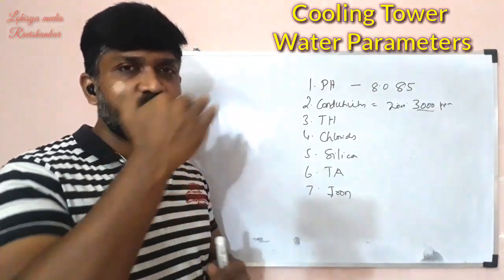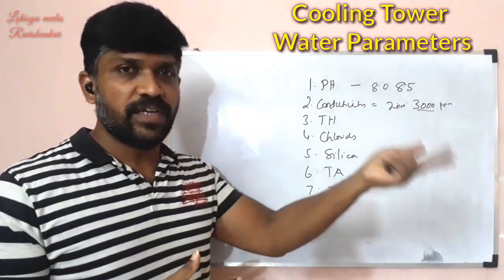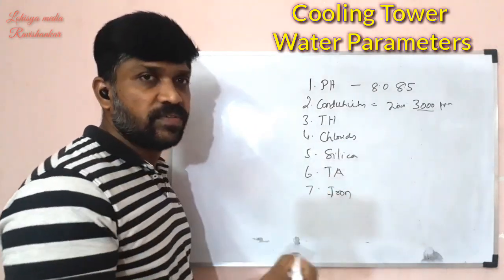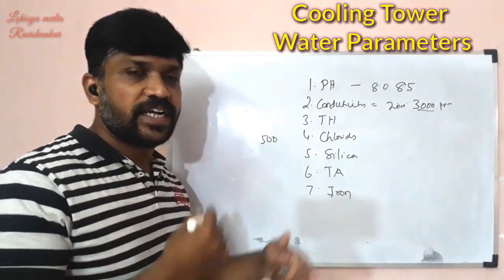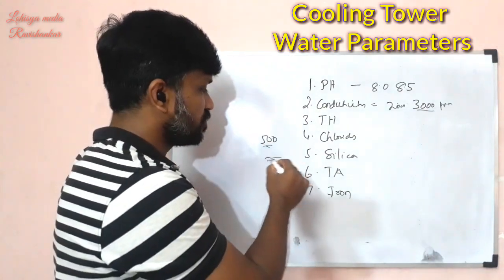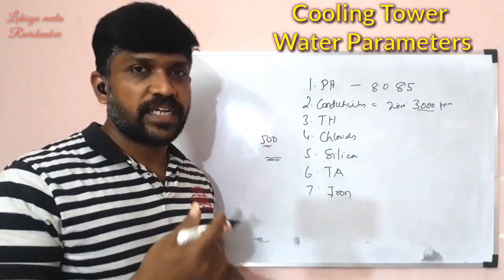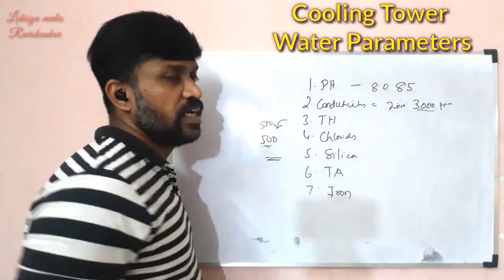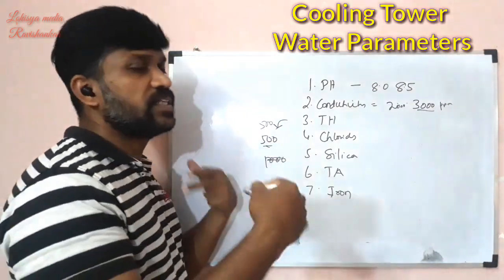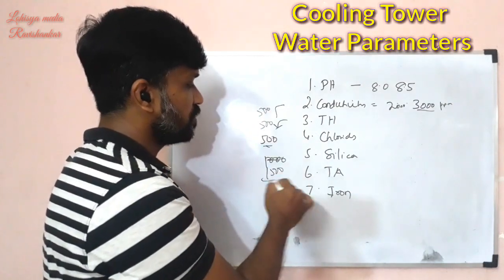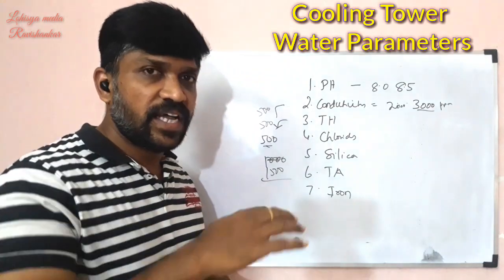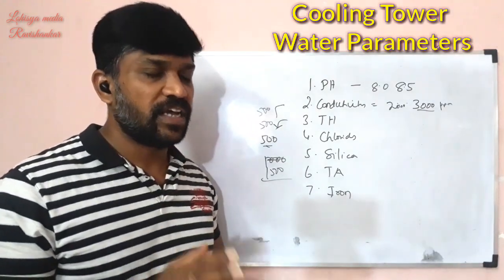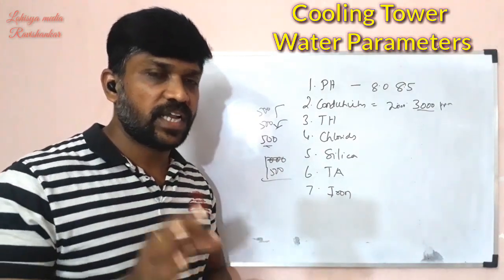If you have fresh water, evaporation will occur and you will have water losses, which you make up. Suppose the fresh water conductivity is 500. As evaporation occurs, the conductivity builds up — say to 1,000 — giving a COC of 2. The maximum conductivity we maintain is around 3,000 units, and we aim to keep it effective in the 1,000–2,000 unit range.